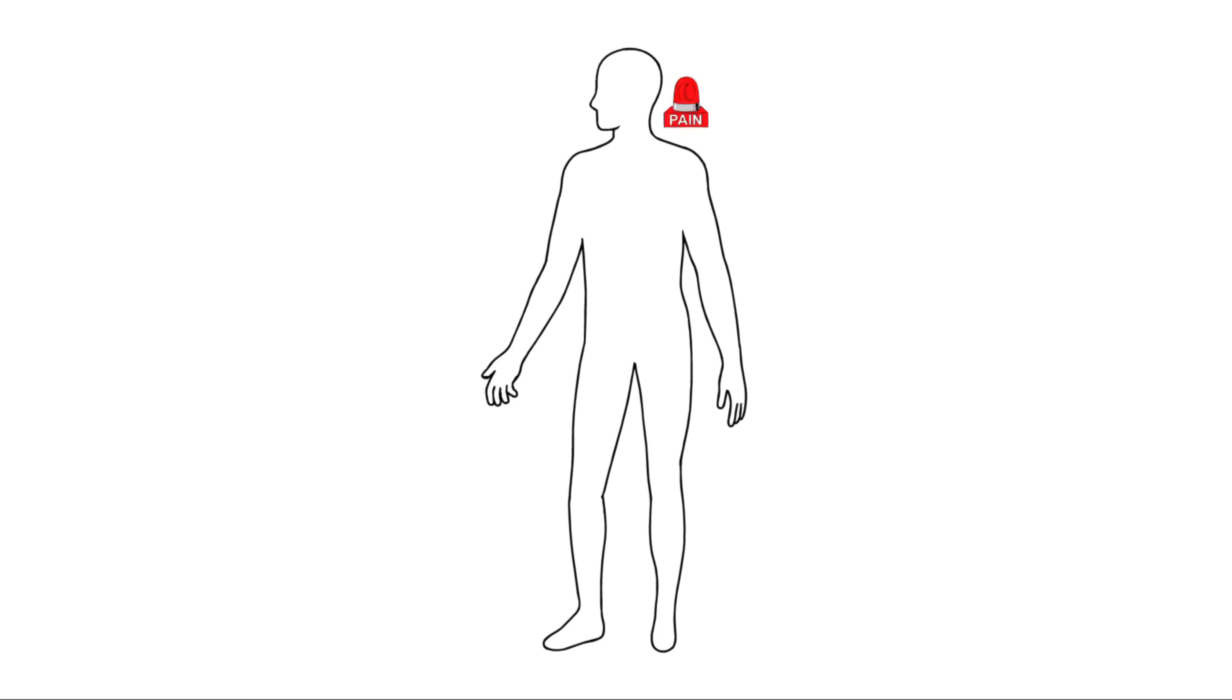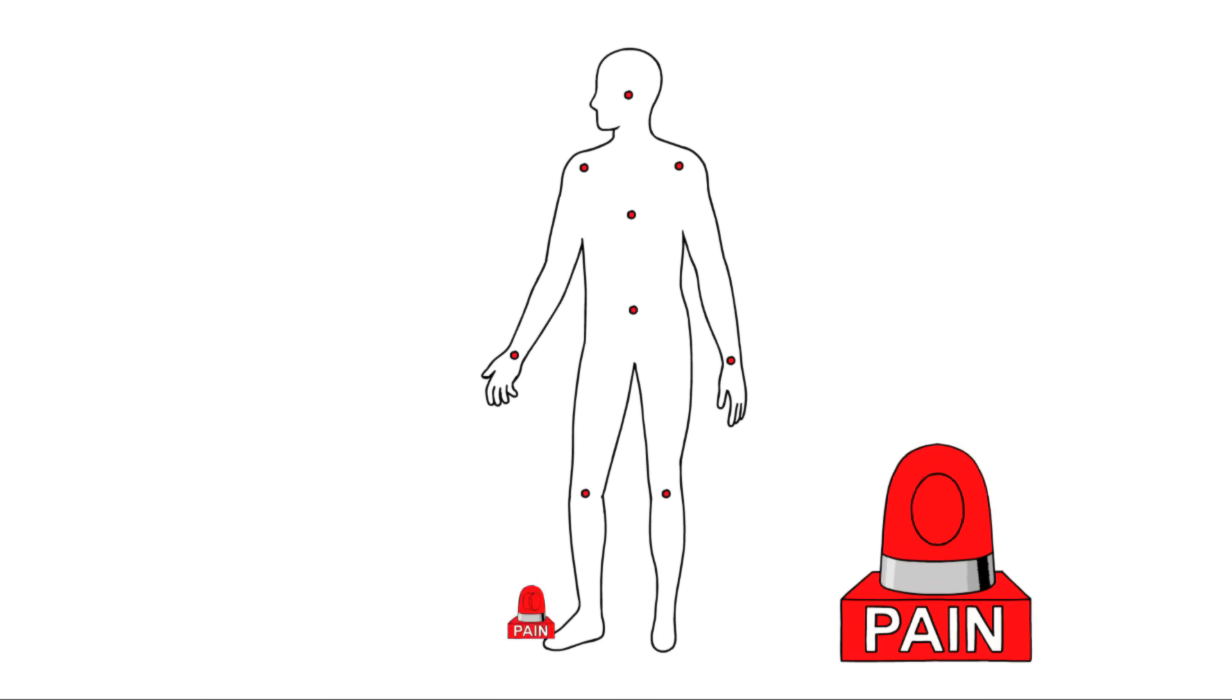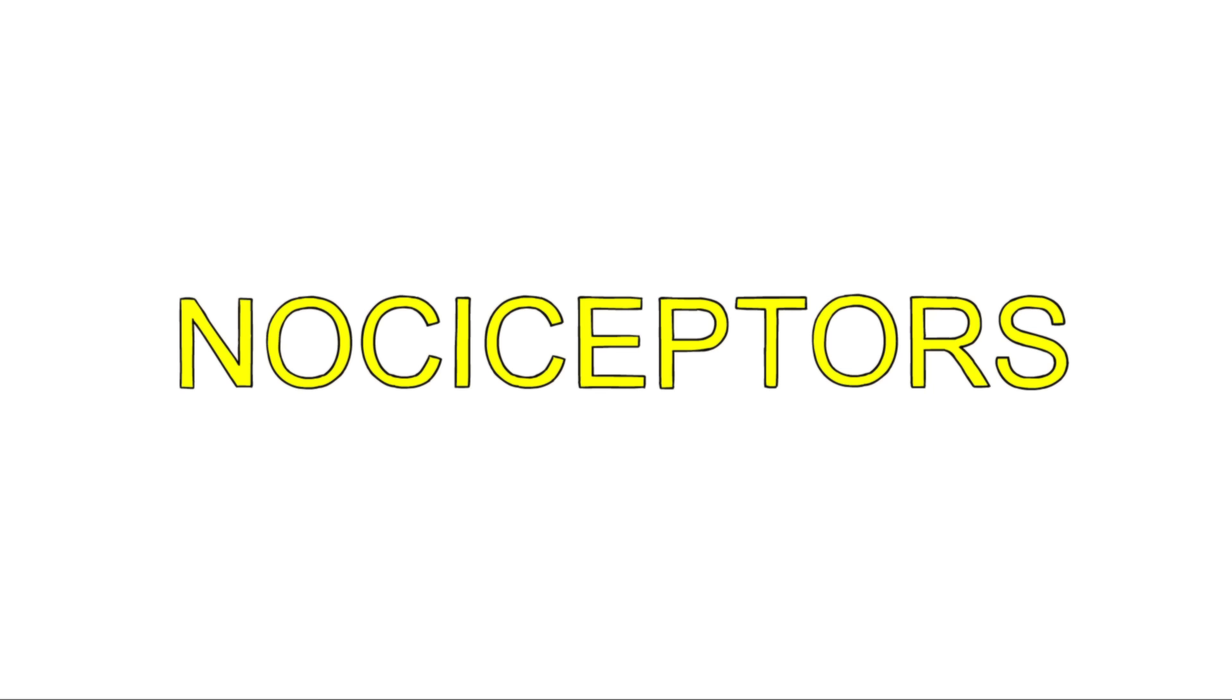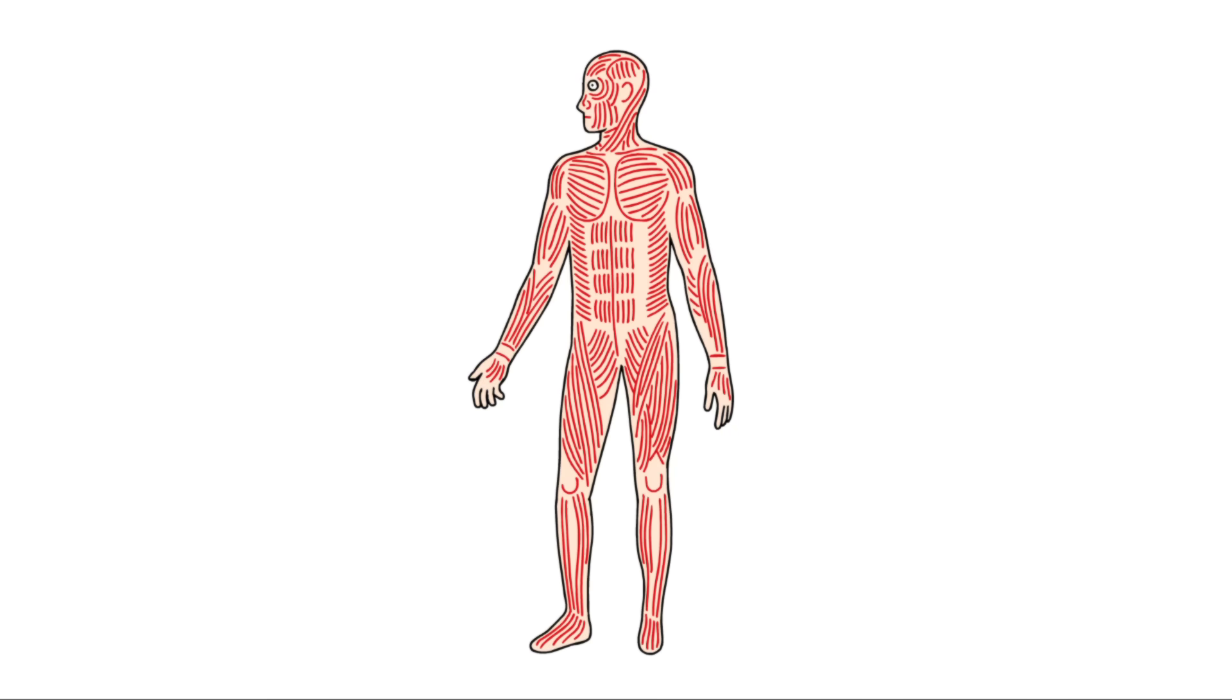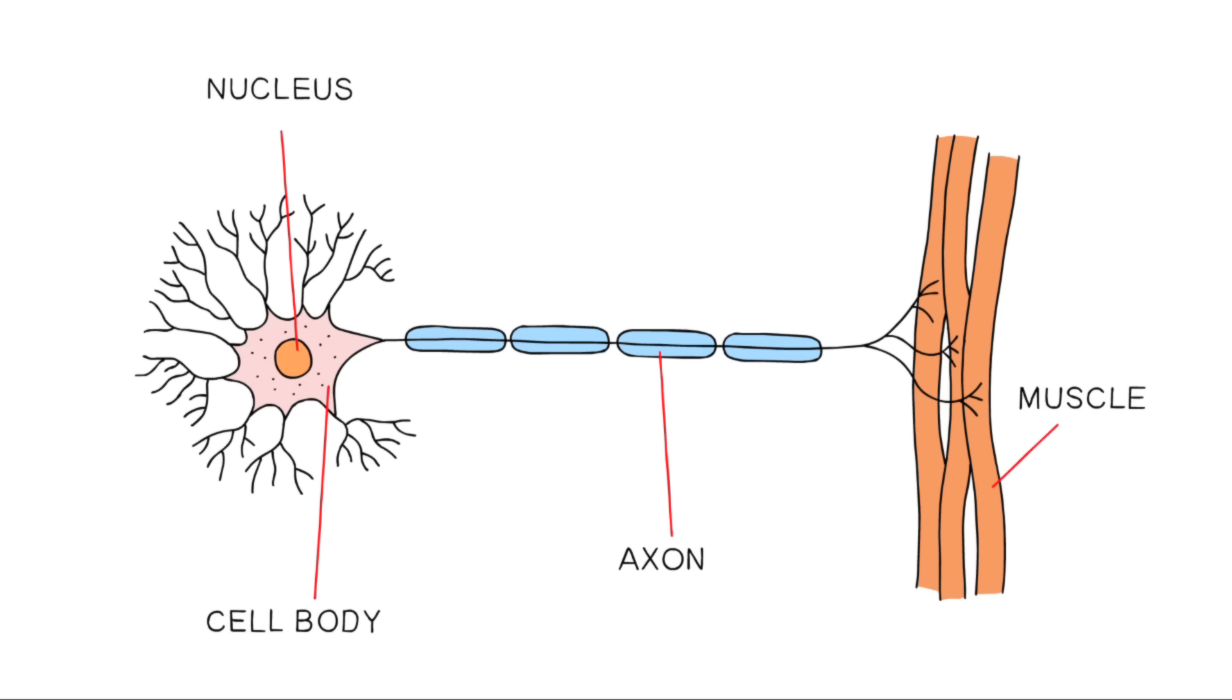As we grow, we install pain detectors in most areas of our body. These detectors are specialized nerve cells called nociceptors that stretch from your spinal cord to your skin, your muscles, your joints, your teeth, and some of your internal organs.